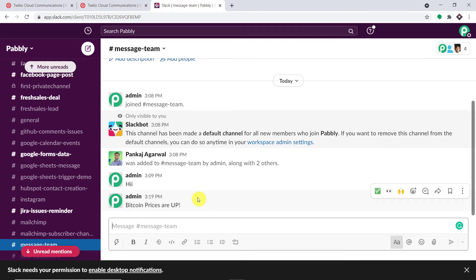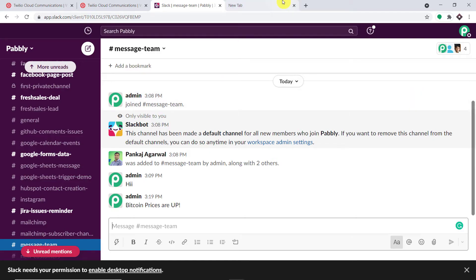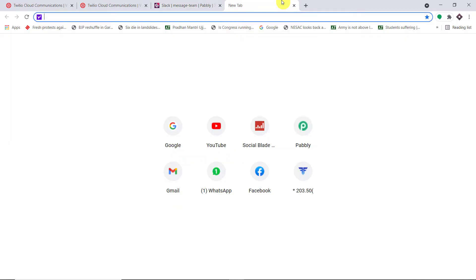You must be thinking how did I do it — how is the text message I sent to a particular phone number now present in my Slack channel? Basically, I used an integration and automation software called Pably Connect that integrates Twilio to Slack. The best part of using this process is there is no need for coding skills or technical background.